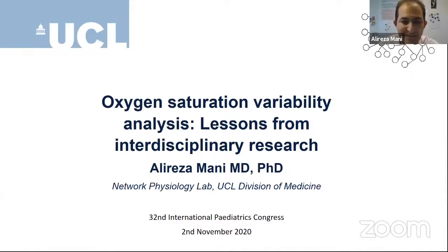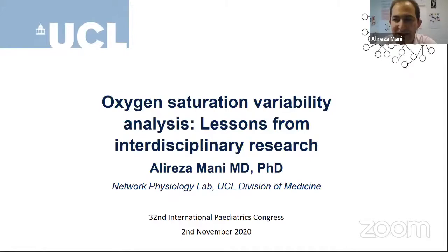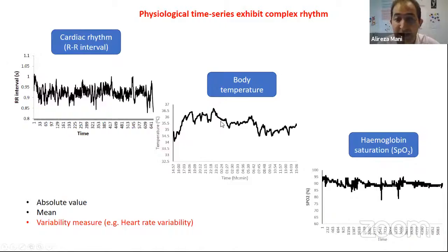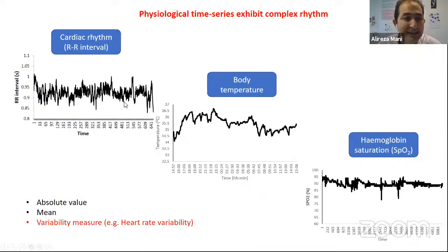It is my great pleasure to share some of our results and research from the past few years. Oxygen saturation, SpO2, is one of the most common signals recorded at emergency departments and intensive care units. What has fascinated us is the complexity of fluctuations we observe in these signals. When we look at the cardiogram, body temperature, and SpO2, we see very interesting and complicated fluctuations. Clinicians often look at absolute values or means, but another way is to look at variability and fluctuations.